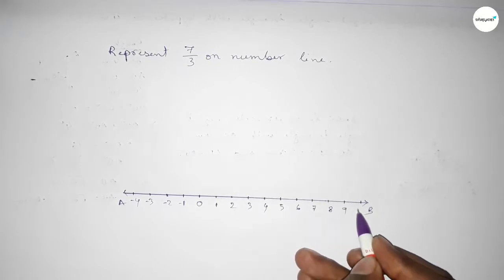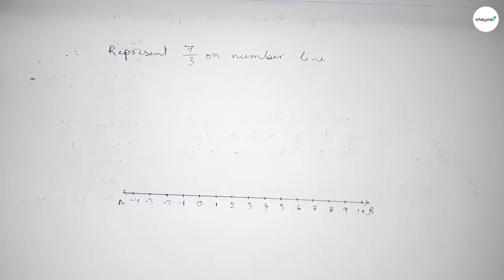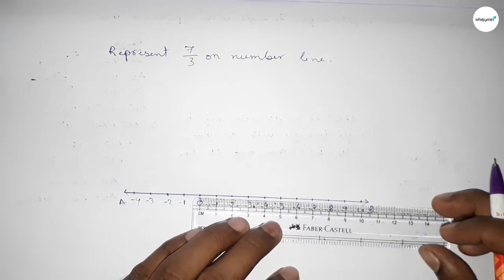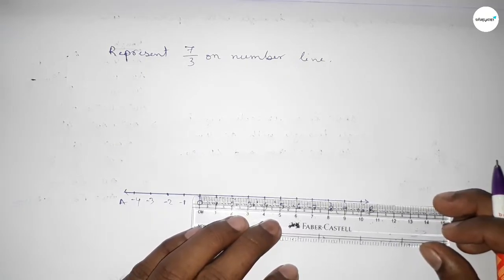Now we have to divide the distance between any two numbers into three parts approximately.